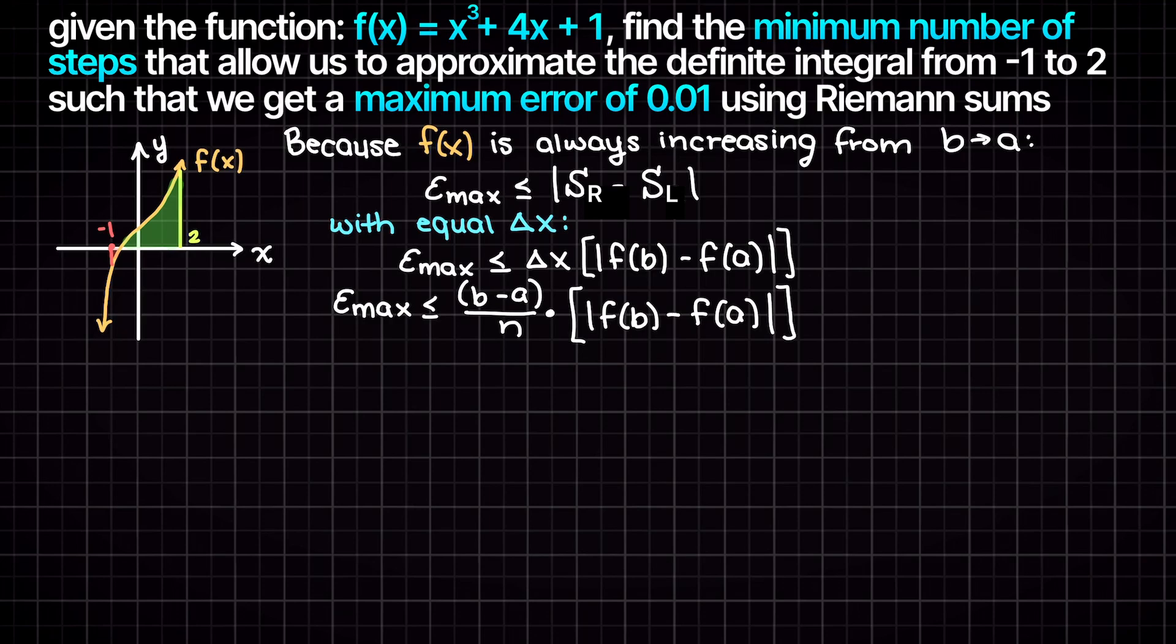over the number of steps n, and this is the variable we are trying to find. We have our desired maximum error of 0.01 that was given in the problem statement.